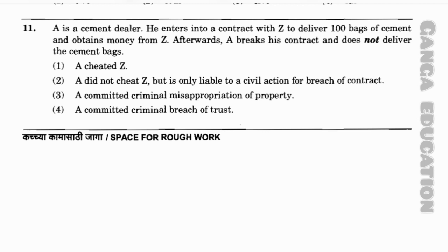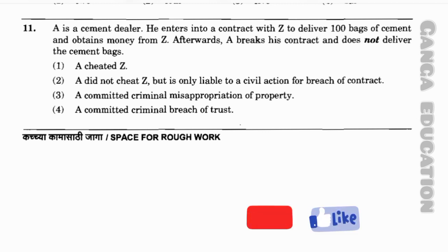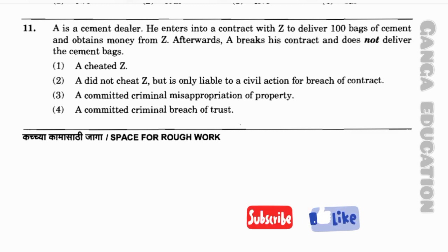Question number 11: A is a cement dealer. He enters into a contract with Z to deliver 100 bags of cement and obtains money from Z. Afterwards A breaks his contract and does not deliver the cement bags. Option 1: A cheated Z. Option 2: A did not cheat Z but is only liable to civil action for breach of contract.